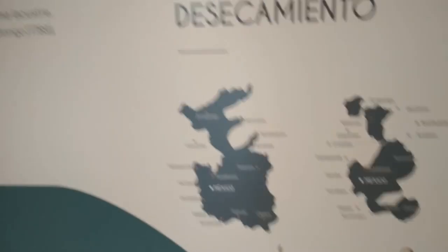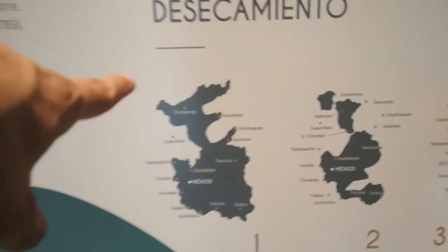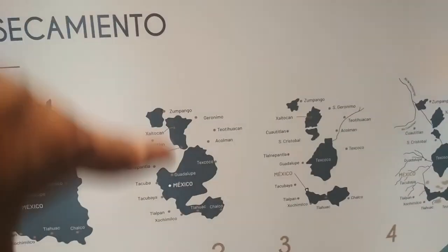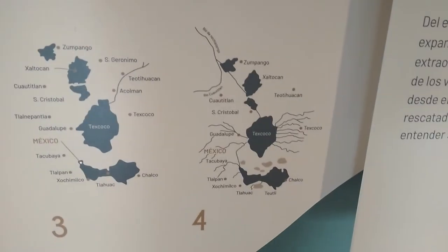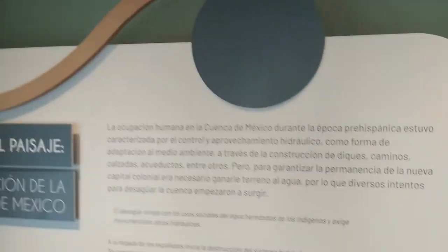Aquí vemos cómo fue la desecación del lago. Aquí está un lago grande y se empieza a hacer chiquito, chiquito y más chiquito. Y aquí nos habla sobre la desecación, que ya sabemos que ha ido secando.